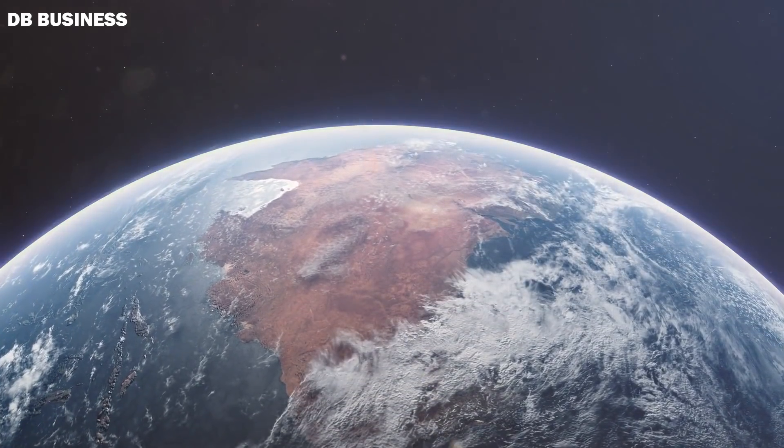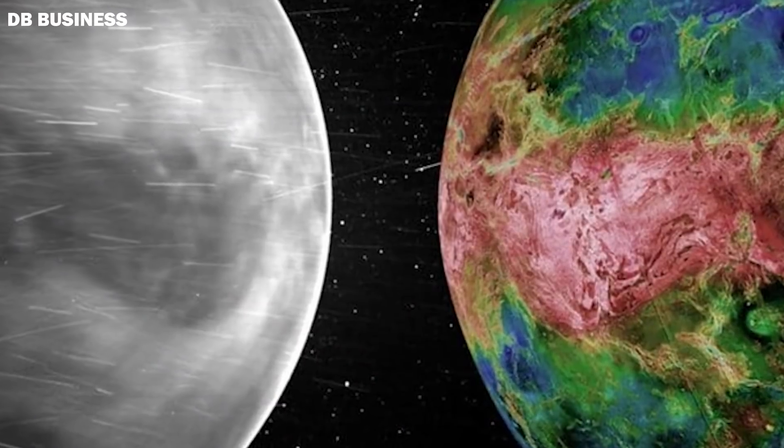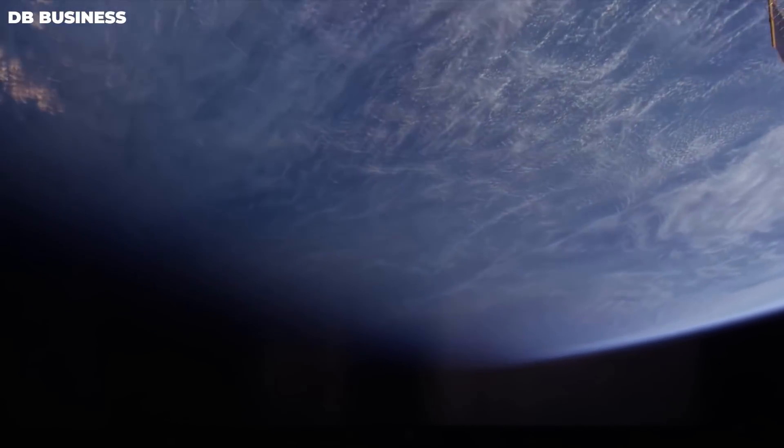With these images, we can say for sure that Venus has more similarities to Earth than we ever thought. In these images, you can see continental regions, plateaus, and plains. It's amazing.